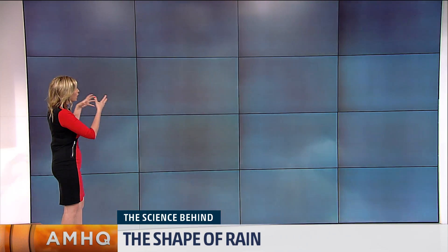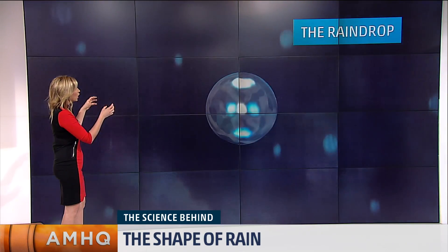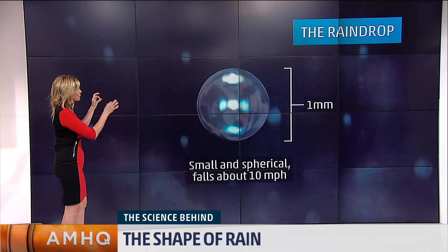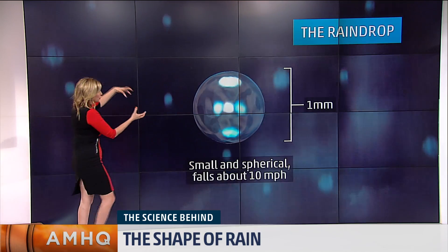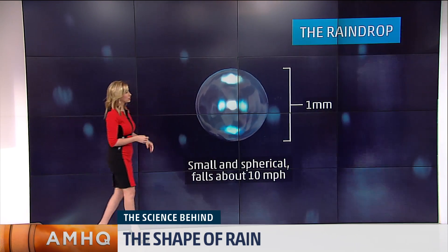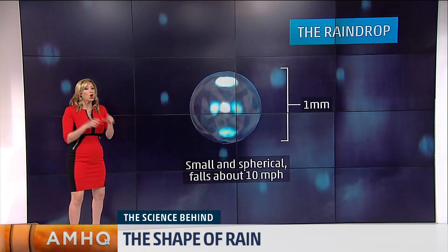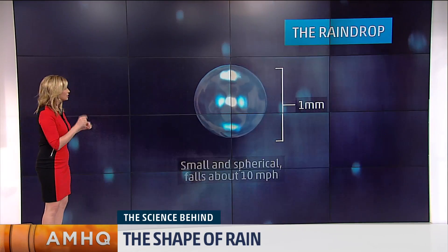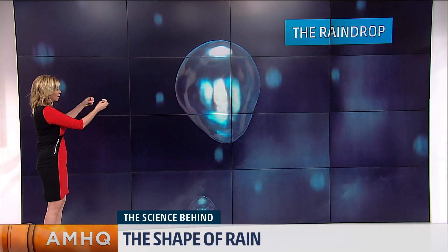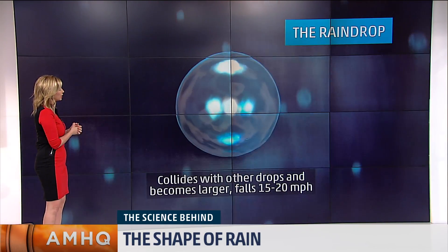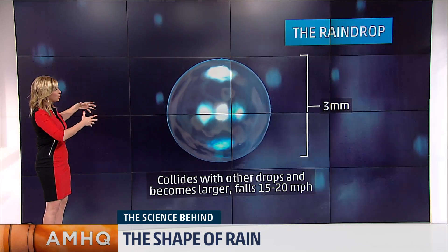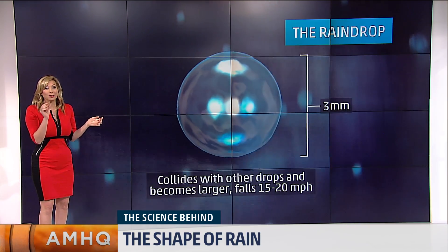High up in the atmosphere, there are little suspended spherical shapes — they're round, falling at about 10 miles an hour, very small, only one millimeter in size. These droplets bond together, collide, and get bigger and bigger, up to maybe three millimeters.